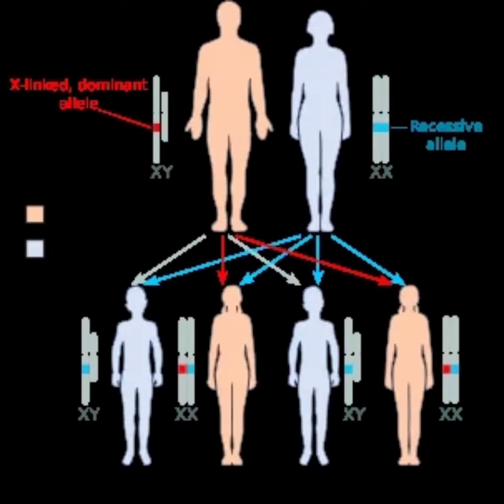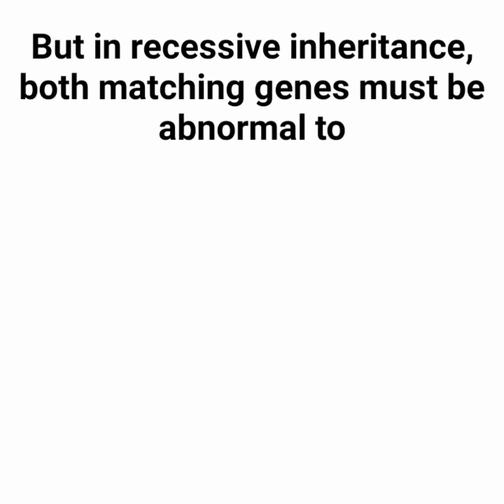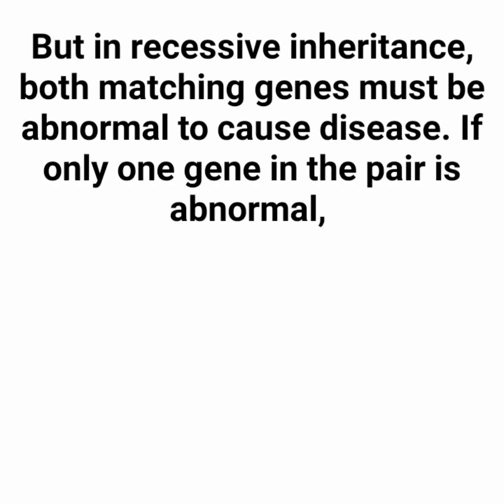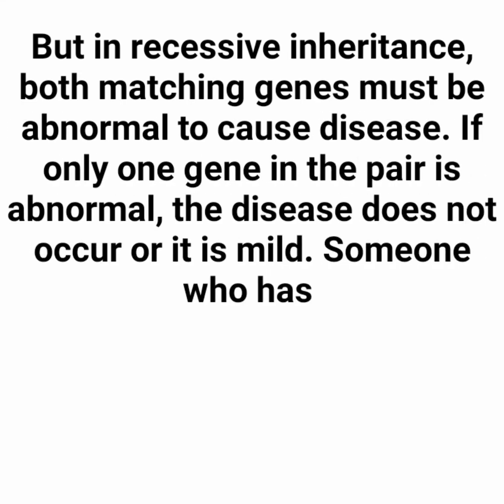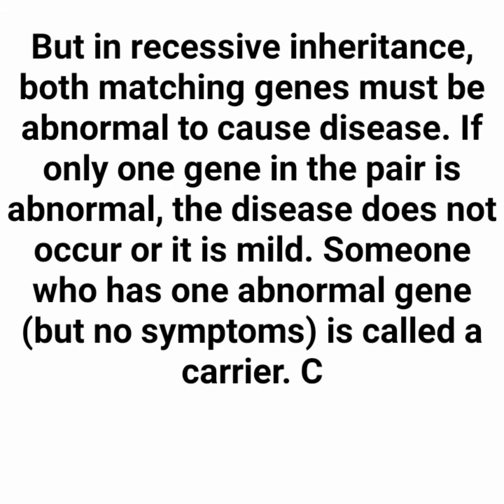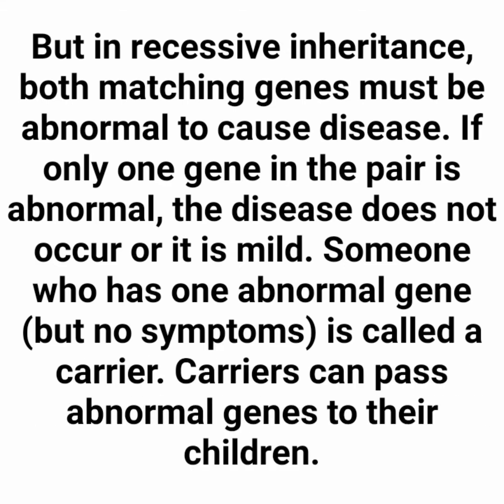This is also another example of dominant inheritance. In recessive inheritance, both matching genes must be abnormal to cause disease. If only one gene in the pair is abnormal, the disease does not occur or it is mild. Someone who has one abnormal gene but no symptoms is called a carrier, and carriers can pass abnormal genes to their children.